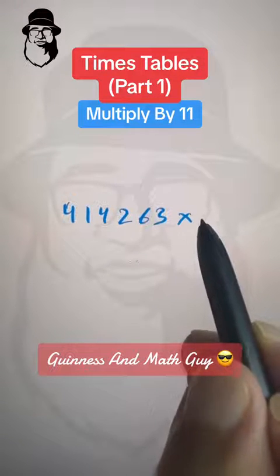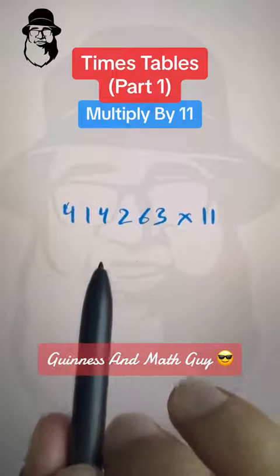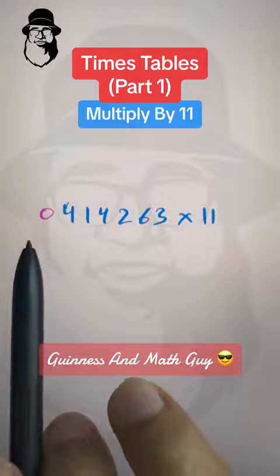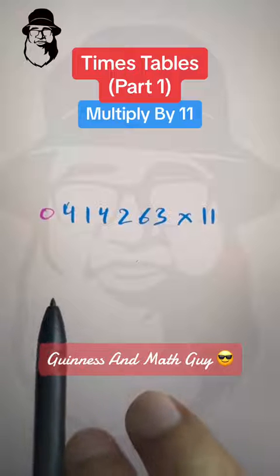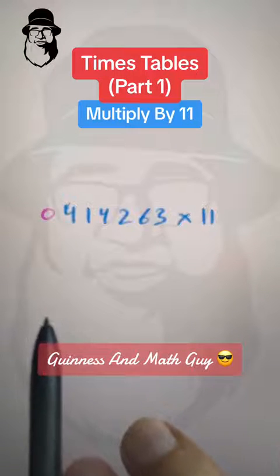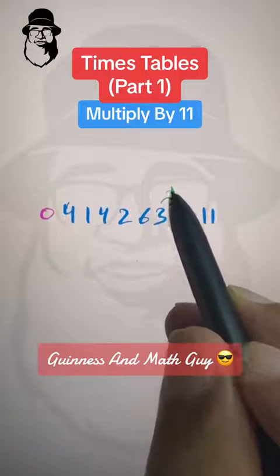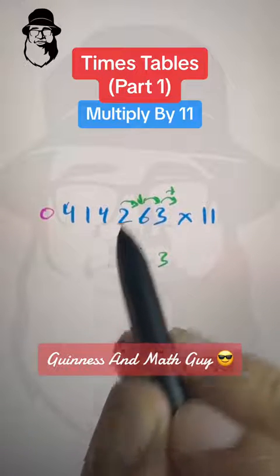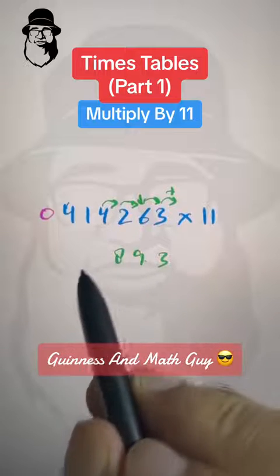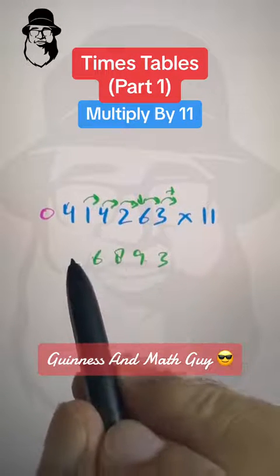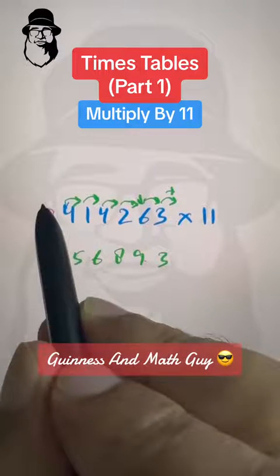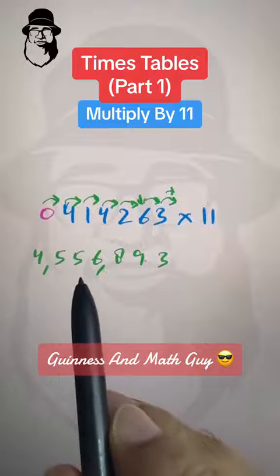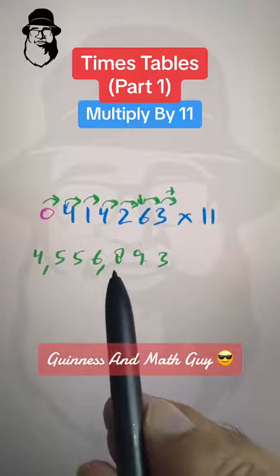So 414263 times 11. Do it yourself. Pause the video. And then we will do it together. And let me put 0 here. You can consider putting 0 here or you can just think in your mind that there is 0 here to carry out the multiplication. 3 added to neighbor is still 3. Now, this 6 added to 3 is 9. 2 added to 6 is 8. This 4 added to this 2 is 6. 1 plus 4 is 5. And this 4 plus 1 is again 5. Then this 0 plus 4 is 4. And that is our answer. 4,556,893.